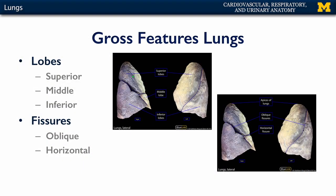The right lung typically consists of three lobes: a superior, a middle, and an inferior lobe, whereas the left lung typically consists of only a superior and an inferior lobe.